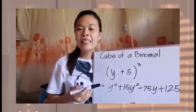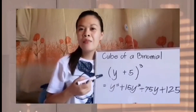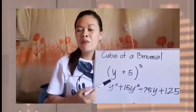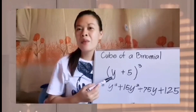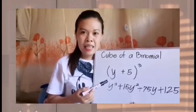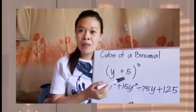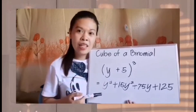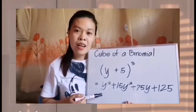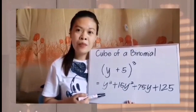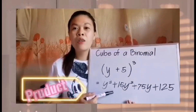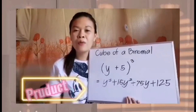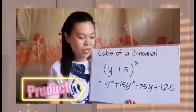Okay math lovers, now let us have our last example: the cube of the quantity of y plus 5. Our variable now is y. Let us just be mindful of the variables and of the given signs. So let's have our steps in getting y cubed plus 15y squared plus 75y plus 125.